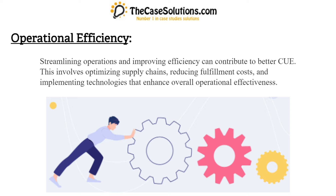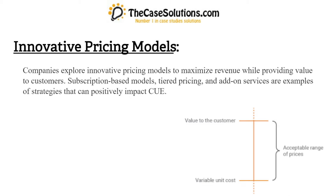Operational efficiency: streamlining operations and improving efficiency can contribute to better CUE. This involves optimizing supply chains, reducing fulfillment costs, and implementing technologies that enhance overall operational effectiveness. Innovative pricing models: companies explore innovative pricing models to maximize revenue while providing value to customers. Subscription-based models, tiered pricing, and add-on services are examples of strategies that can positively impact CUE.